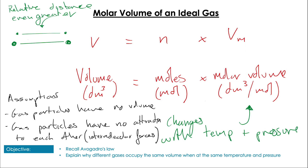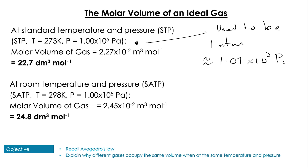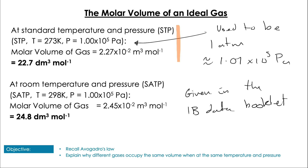That leads us on to STP and SATP — standard temperature and pressure, and standard atmospheric temperature and pressure. You may see these written online as 1.01 × 10⁵ pascals or 1 atmosphere; before 1982 that was the standard. But you will be using 100,000 Pa exactly. You'll focus mainly on STP in your calculations, and it's given in the IB data booklet on table 2, including the molar volume at that temperature and pressure.